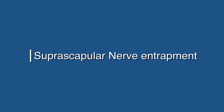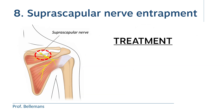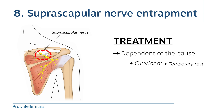Number eight: suprascapular nerve entrapment. In this condition, the suprascapular nerve, which runs over the top of the shoulder blade, is inflamed or compressed, causing pain and sometimes muscle weakness in the area over the shoulder blade. Treatment is dependent on the cause. In case of overload and inflammation, temporary rest with physiotherapy afterwards may suffice. In case of compression, surgery may sometimes be required to release the nerve.